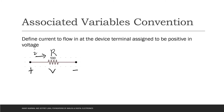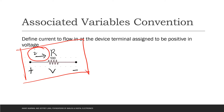Let us now go to the associated variables convention. This is a convention that defines the current flowing into a device terminal assigned to be positive in voltage. For example, with this resistor R, we define current I such that the positive part of the voltage is placed at the entry point and the negative part at the other. If the current flows from the positive terminal to the negative terminal, we say this current is positive. If the current flows the other way — from the negative terminal to the positive terminal — we say the current is negative.